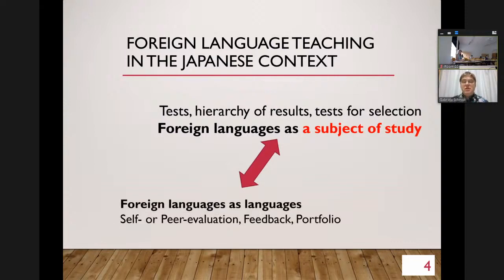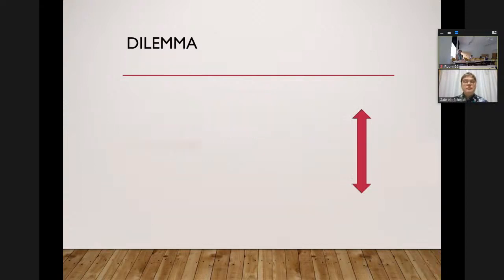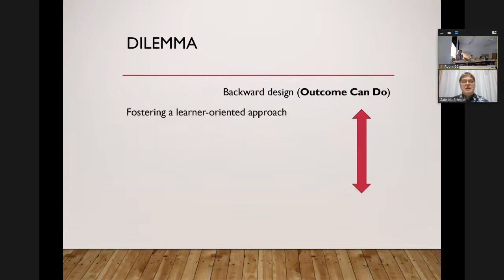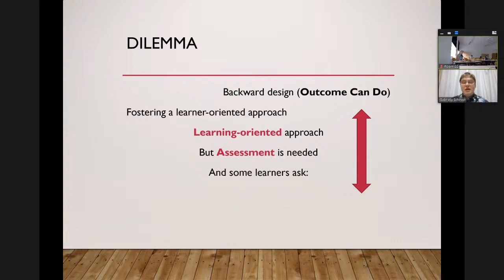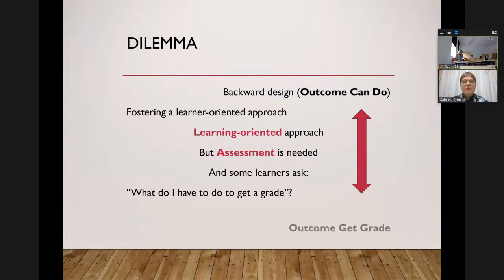Because if you want to teach a language as a language for using it, I try to get away from summative assessment to more self and peer evaluation, feedback, and portfolio-oriented approaches. The dilemma is that backward design is outcome-oriented and fosters a learner-oriented approach, but assessment is needed anyway — we have to grade students. Some learners ask right away, 'What do I have to do to get a grade?' They never ask what they can use the language for. The outcome they seek is the grade, not what they can do.